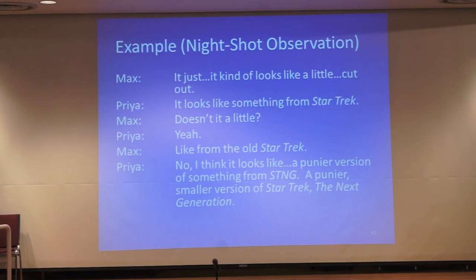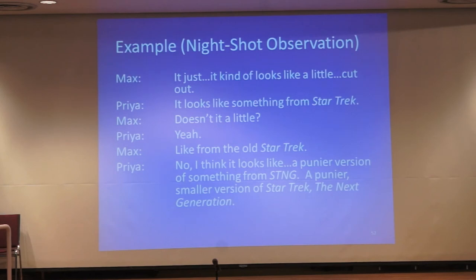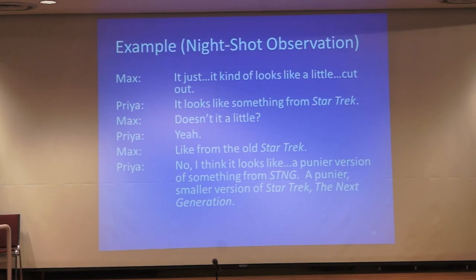Here's an example conversation. Matt is the father and Priya is the daughter. They're looking at Saturn through a telescope. Matt says, 'It just kind of looks like a little cutout.' Priya says, 'It looks like something from Star Trek.' He says, 'Yeah, doesn't it look old? Like from the old Star Trek.' She says, 'No, like a punier version of something from Star Trek: The Next Generation.' I know exactly the sequence in the beginning of Star Trek where they're flying by Saturn, so I know exactly what she's thinking of. This is great evidence that she's connecting current experience to prior knowledge.